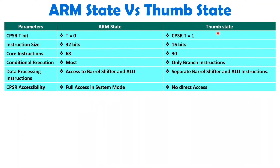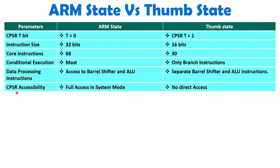In Thumb state, the user has no direct access to the CPSR register. If a user wants to access the CPSR register completely, that is not possible from Thumb state. The user must first invoke ARM state, then invoke system mode, and then full access to the CPSR will be granted.